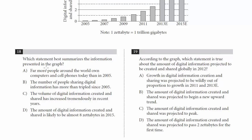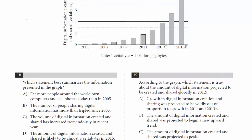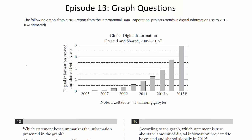So let's go ahead and check out these questions. Question 18: which statement best summarizes the information presented in the graph? Let's go to the graph and summarize it ourselves, then see which choice best matches. The title of the graph is 'Global Digital Information Created and Shared.' Always check the axes — on the x-axis we've got the years, and on the y-axis we have digital information created and shared in zettabytes.